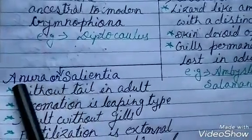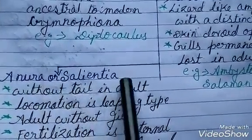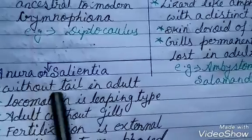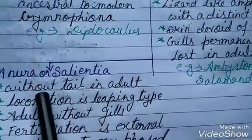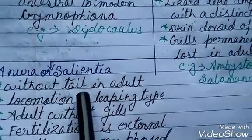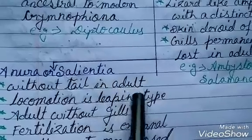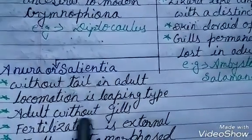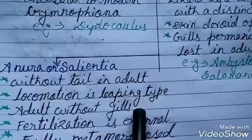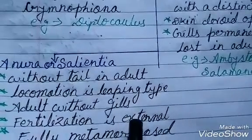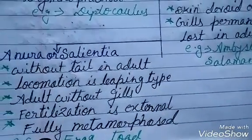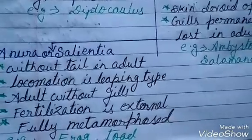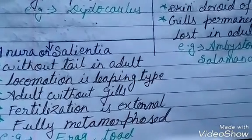The next order is Anura or Salientia. These are amphibians without a tail. The tail is present in the larval form, known as tadpoles. Locomotion is of the leaping type. Adults are without gills. Fertilization is always external, and metamorphosis is complete. Example is frog and toad.